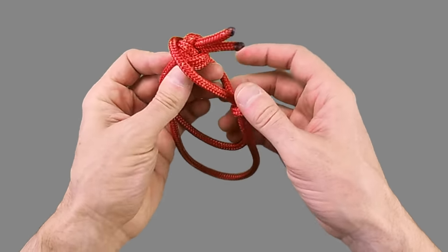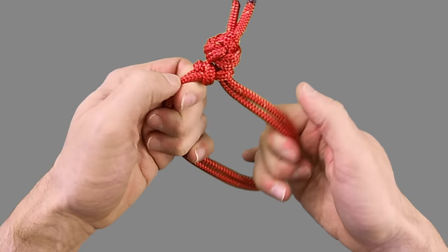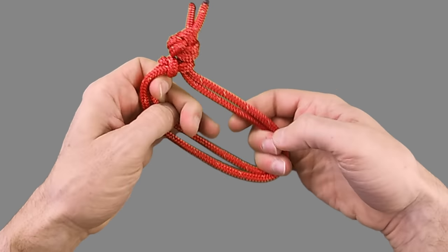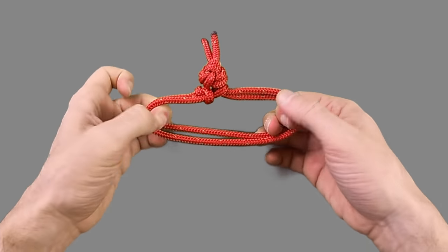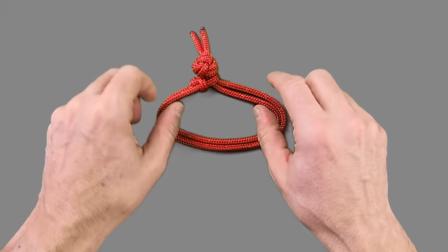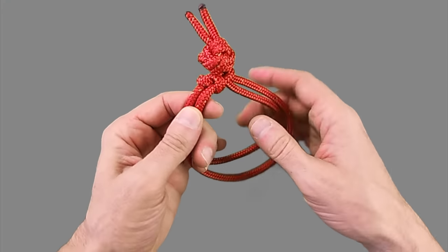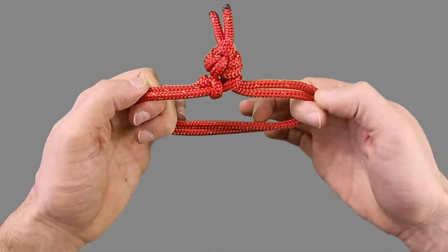Then pull it tight on itself to create a semi-permanent finish to your stopper knot. The only downside of this knot is that the extra knots that you put to create the loop will reduce the overall breaking strain of the soft shackle.